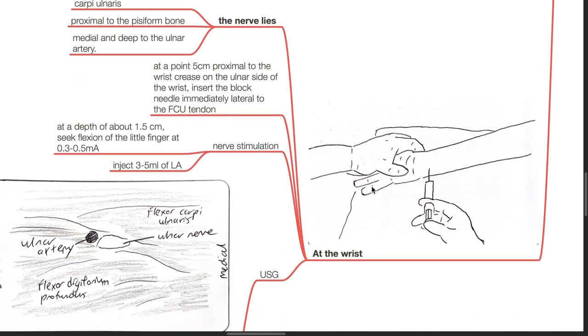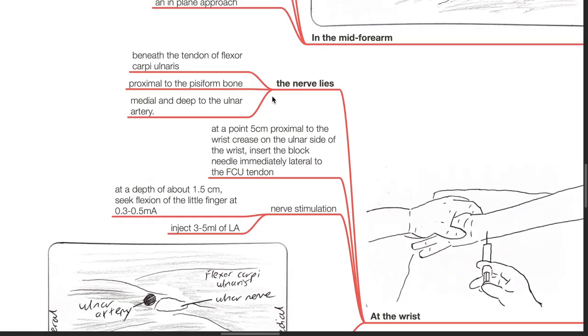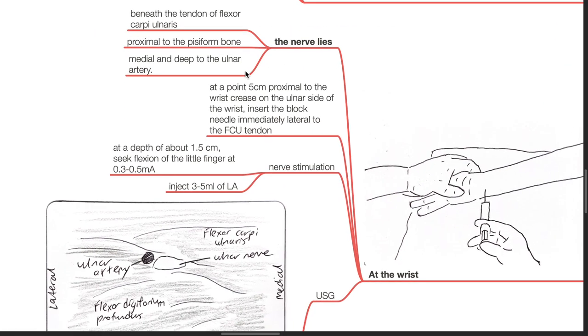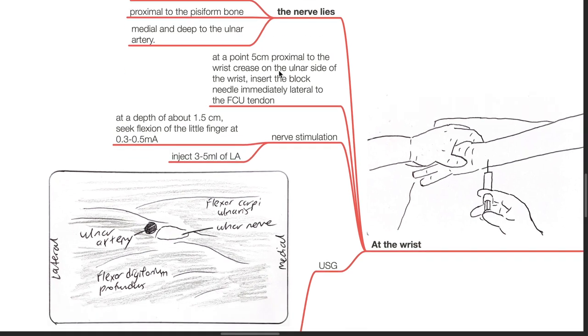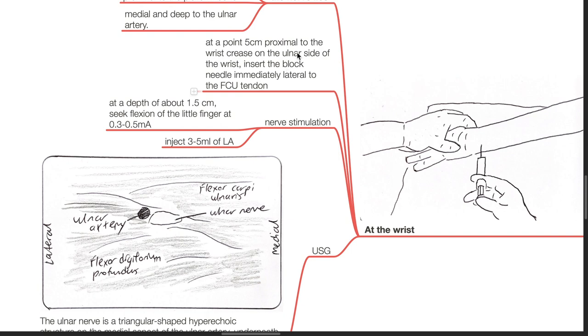At the level of the wrist, the ulnar nerve lies beneath the tendon of the flexor carpi ulnaris proximal to the pisiform bone, medial and deep to the ulnar artery. At 0.5 cm proximal to the wrist crease on the ulnar side of the wrist, insert the block needle immediately lateral to the flexor carpi ulnaris tendon. Nerve stimulation at the depth of about 1.5 cm will result in flexion of the little finger at 0.3 to 0.5 mA. Inject 3 to 5 mL of local anesthetic to block the ulnar nerve.